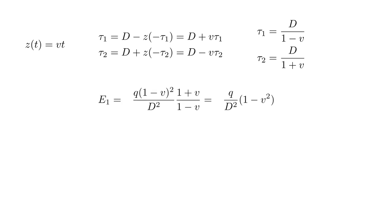Substituting this into our expression for E-one and cancelling a common factor of one minus V, we get Q over D squared times one minus V squared. For E-two, we get minus Q over D squared times one minus V squared. Since E-one plus E-two equals zero, there is no self-force in this case.